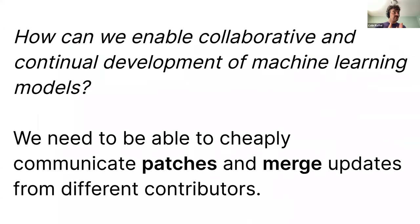The main purpose of my talk today is to show two very small steps towards what I would say is a true version control system for machine learning models. The two small steps are towards making patches for machine learning models — cheaply communicable updates to a particular model — as well as merging models: taking two models that are based on the same model and combining them together without sacrificing performance. I'll talk about each of those pieces in turn, but I'll stop for a moment in case anyone has any questions.